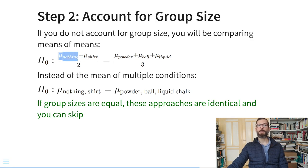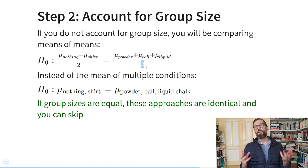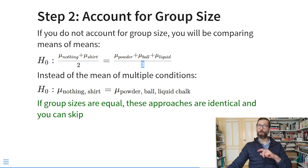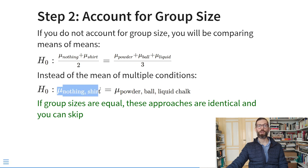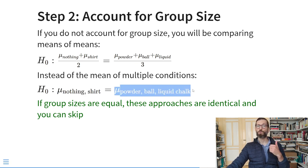The second step is to account for group size. If you skip this step, instead of comparing the means of groups of groups, you will be comparing the unweighted means of means. To account for group size, on each side of a contrast you divide the number of participants in one category by the total participants on that side. If group sizes are equal, this step can be skipped since both approaches are identical.